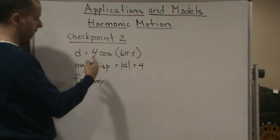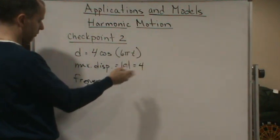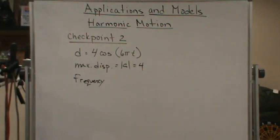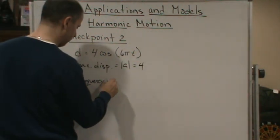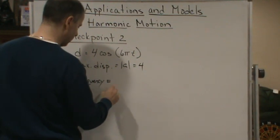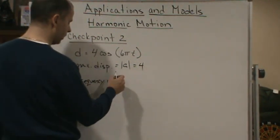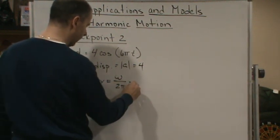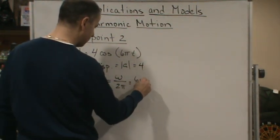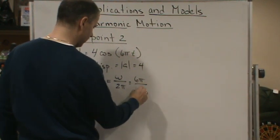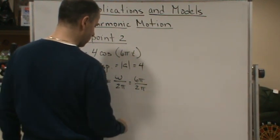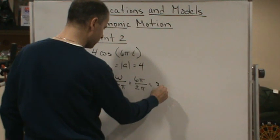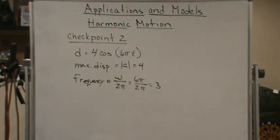The period is 1 third, so the frequency would be 3. But let's use the definition, right? Just like I did before. So in this case, the definition is going to be omega over 2 pi. And then omega is 6 pi. So we're going to plug that in. So it's 6 pi over 2 pi, which equals 3. So there we go. So the frequency is 3.